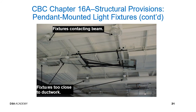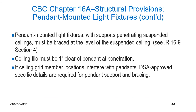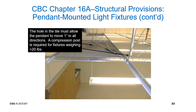Another picture shows issues of interference between pendant-mounted light fixtures and other structural or non-structural components. For pendant-mounted light fixtures with support penetrating suspended ceilings, they must be braced at the level of the suspended ceiling, and the ceiling tile must be 1 inch clear of the pendant at the penetration. If ceiling grid member locations interfere with the pendant, DSA-approved specific details are required for pendant support and bracing. This picture shows a pendant-mounted light fixture below the ceiling with the penetration at the ceiling tile — the hole in the tile must allow the pendant to move 1 inch in all directions.